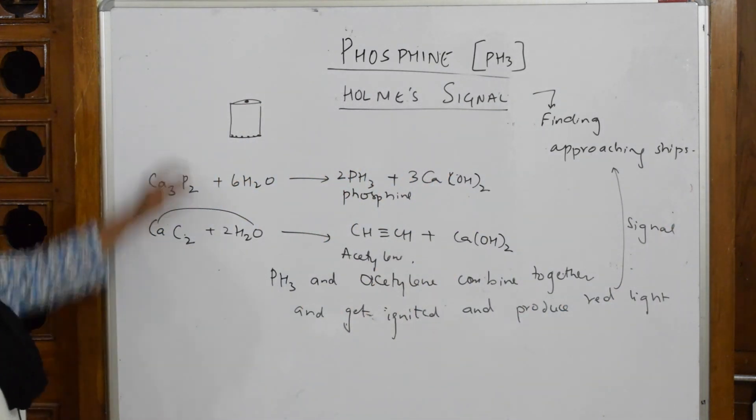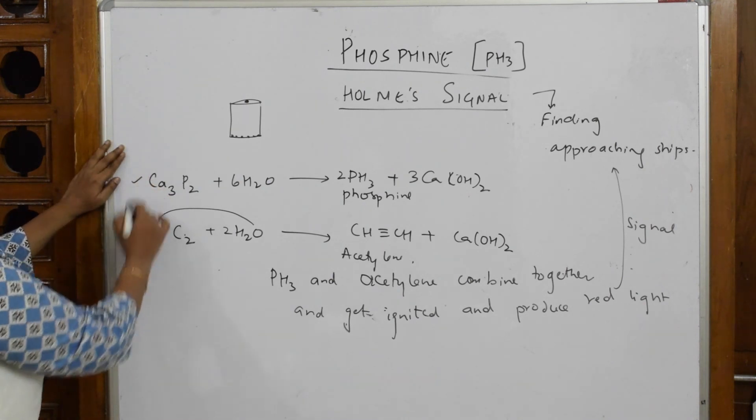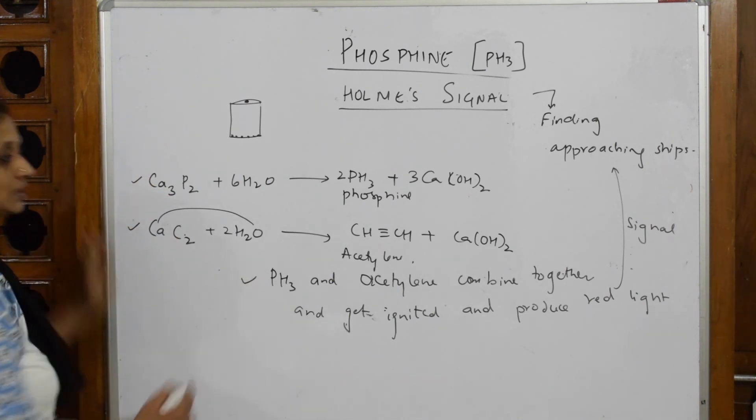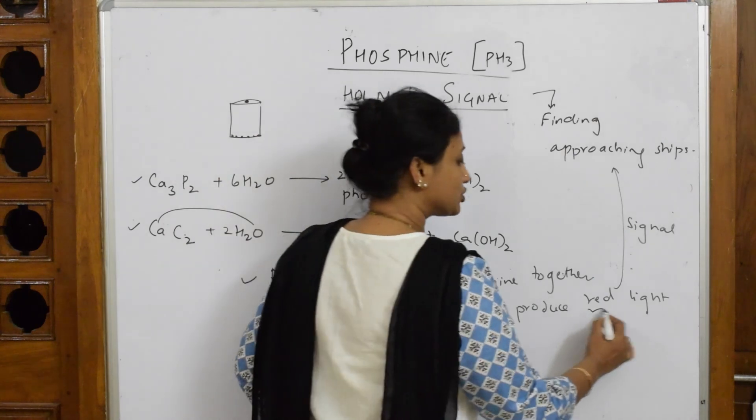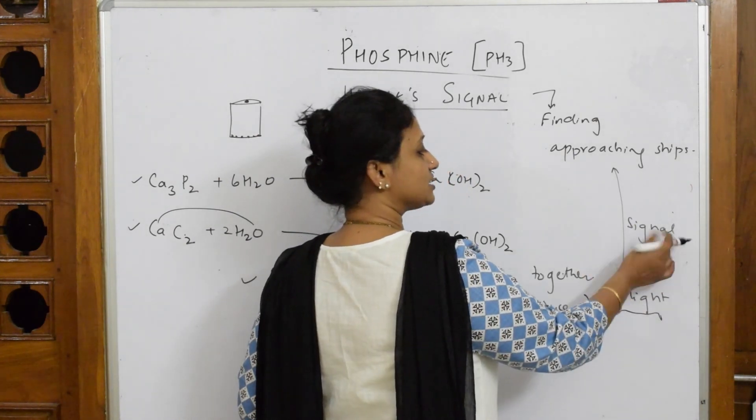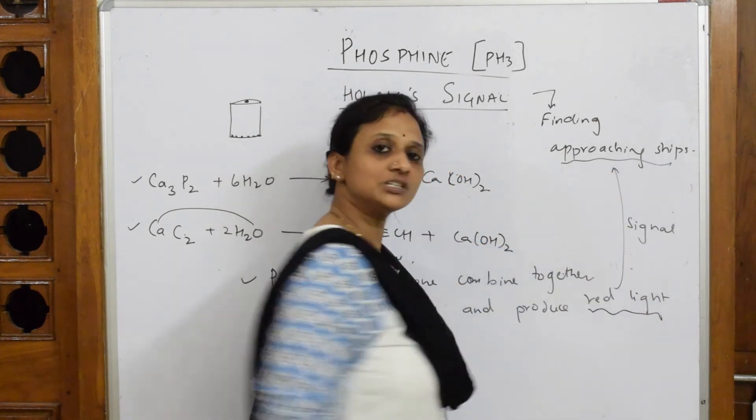So this is called your Holmes signal. If they ask you, try to mention reaction one, reaction two, this is your third one. You're going to underline - it's going to produce red light which is given as a signal for approaching ships.